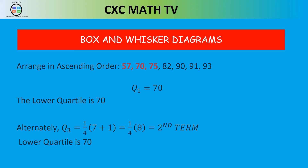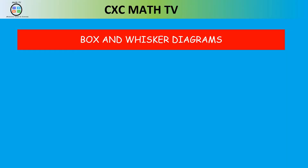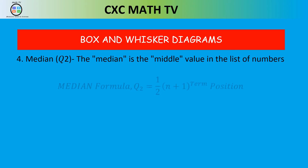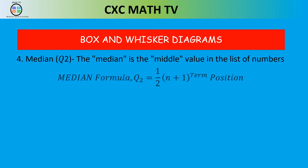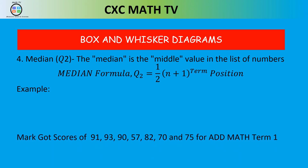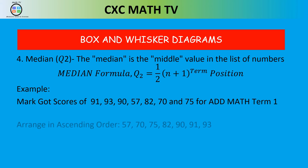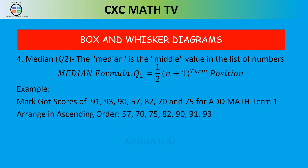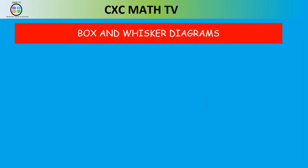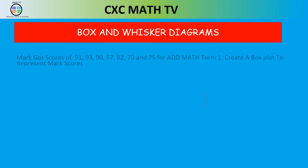To find the median, average the two middle terms. As a formula, the median Q2 is at position ½ × (n + 1). With n = 7, that's ½ × 8 = 4, so the median is the 4th term. In ascending order the 4th term is 82, so the median is 82.